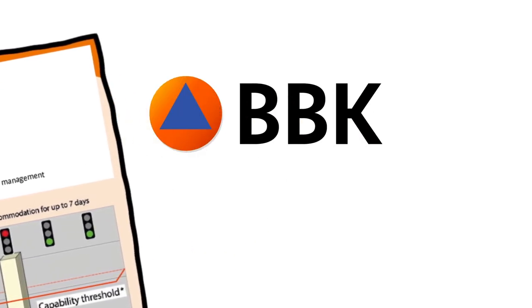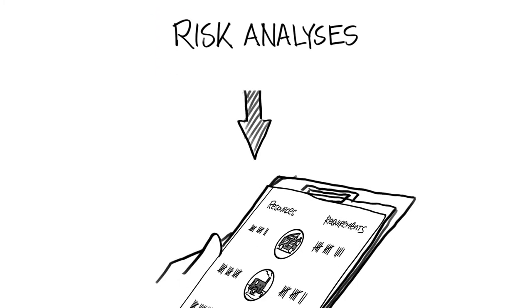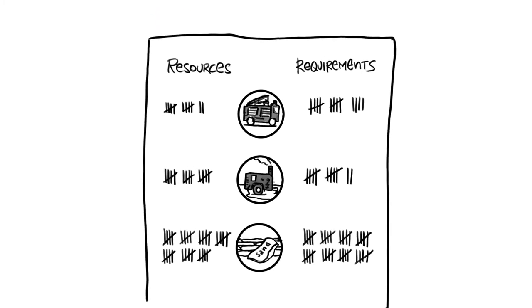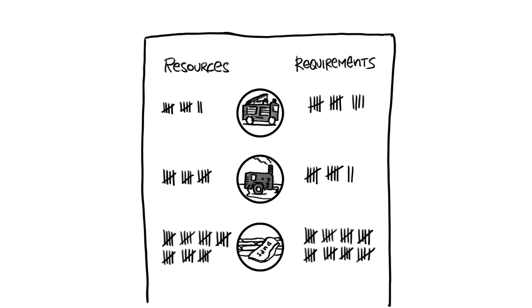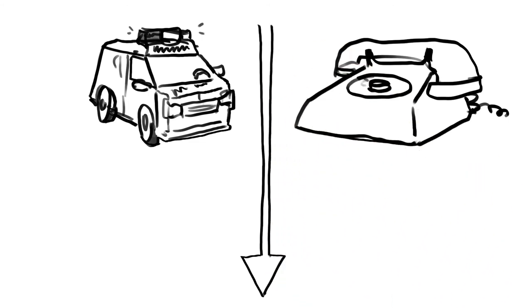The BBK guideline provides a systematic approach for risk analysis. Those responsible for disaster management can use it to see whether their available resources match the actual requirements in emergency situations. It focuses on the following questions: What is the disaster management system capable of? What does it need to efficiently deal with hazards and threats — whether that might be additional equipment such as vehicles, or setting up a crisis hotline?